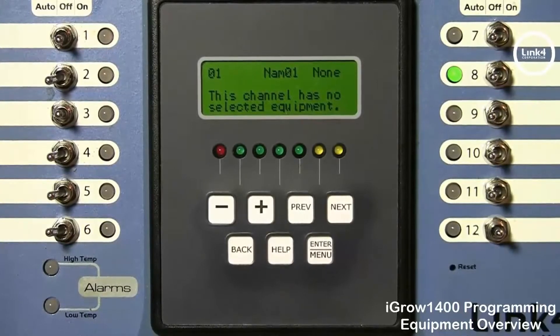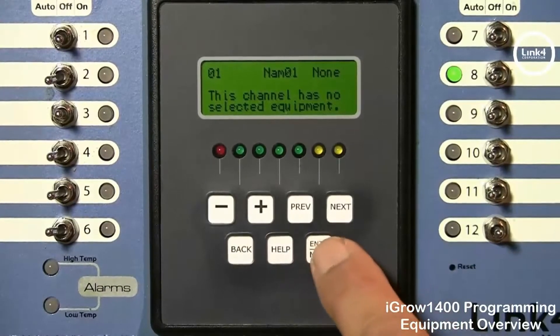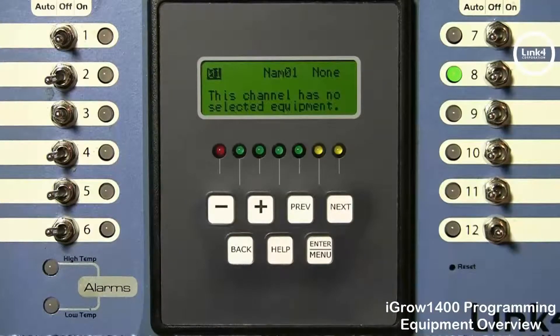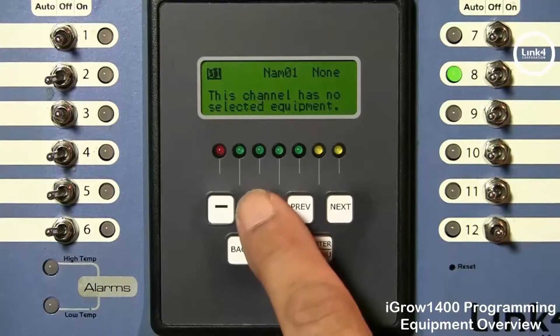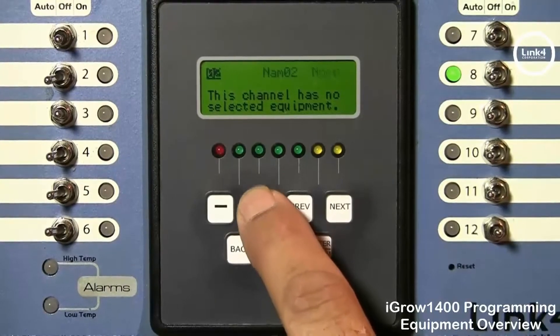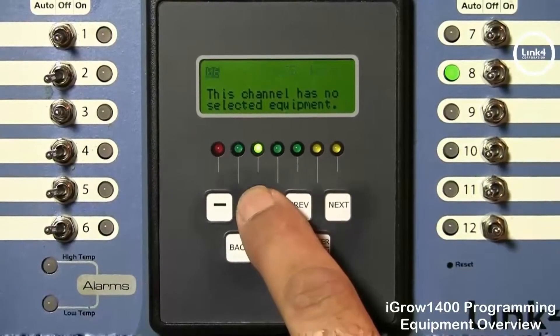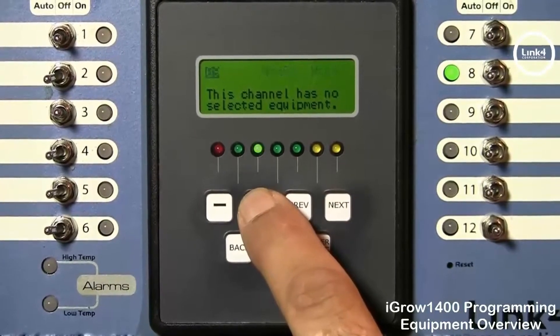Now to begin programming equipment you would hit the enter menu to highlight the top left corner. Once you highlight the top left corner this allows you by hitting plus and minus to navigate between the different equipments that are programmed in this controller.